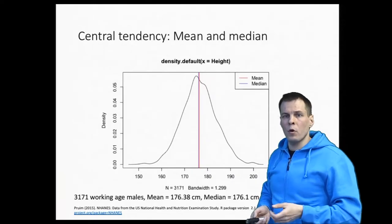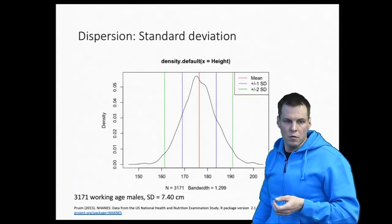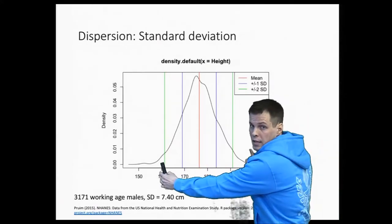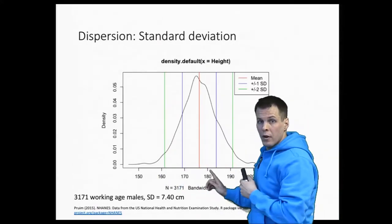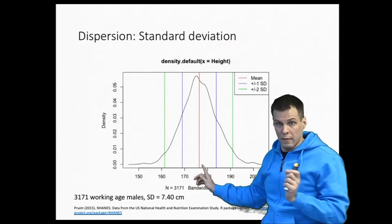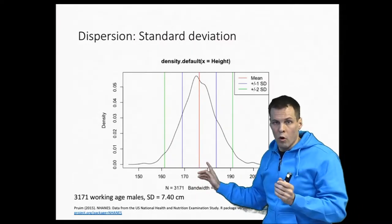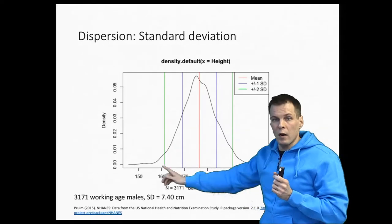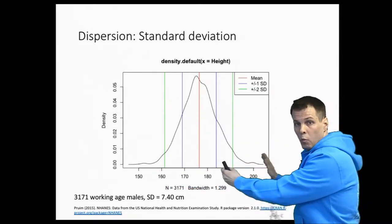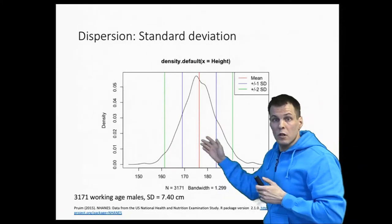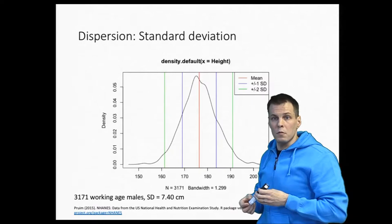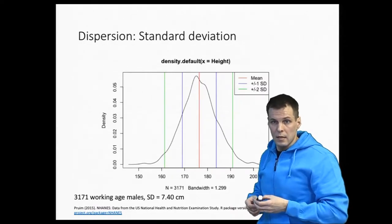The other important concept is dispersion. Dispersion tells us how wide this distribution is — is everyone about the same size, such as between 174 and 176 centimeters, or are people spread between 150 centimeters and two meters? Dispersion tells us how widely these persons are separated. The most commonly used measure of dispersion is standard deviation.